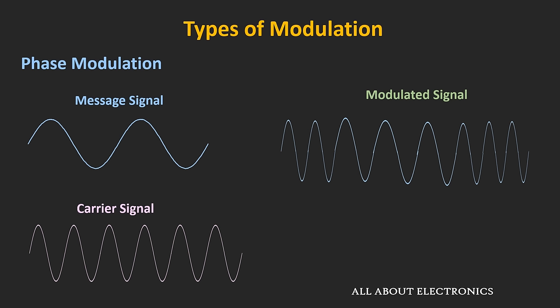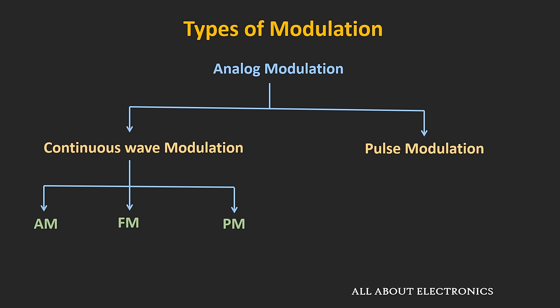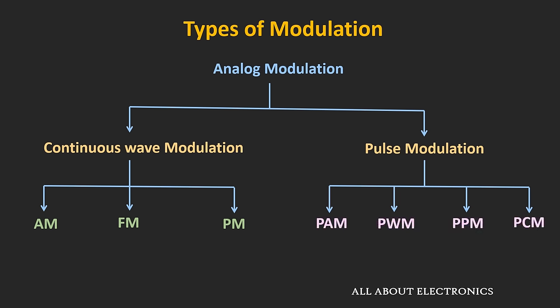In the upcoming videos, we will talk about all these different modulation techniques in detail. Now let's see the different types of pulse modulation techniques. Mainly there are four types: pulse amplitude modulation, pulse width modulation, pulse position modulation, and pulse code modulation.